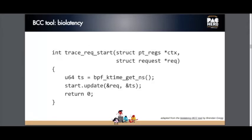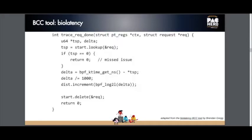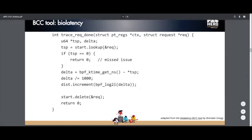The first eBPF hook runs every time a block I/O request is submitted. It gets the current timestamp using an eBPF helper function, stores the request as the key and the timestamp as the value in the map. The second hook fires when the block I/O request completes. It looks up the start timestamp by key; if not found we return. Otherwise we calculate the delta in microseconds by dividing nanoseconds by 1000, compute the log base 2, increment the histogram bucket, and delete the timestamp from the map.